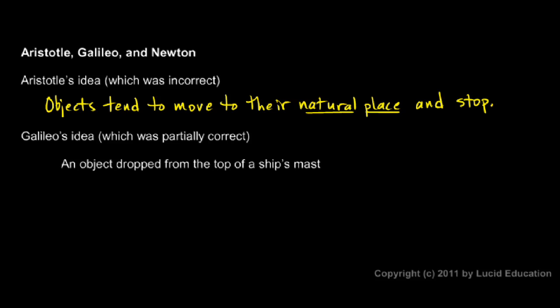Now Galileo's idea, which was partially correct, was that objects can continue in their state of motion, and he imagined a boat on the water. So let's draw a sailboat here. And if you have a mast on the sailboat, so your sailboat might look something like this. And if you climb up the mast and drop something from up on top of the mast, so let's put a person up here.